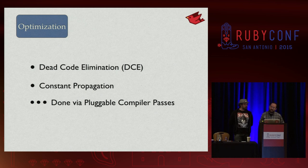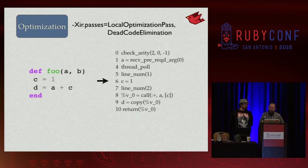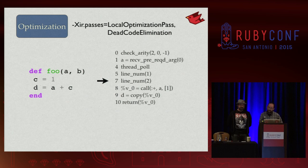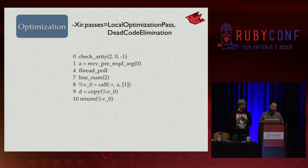We have pluggable compiler passes — dead code elimination and constant propagation are two popular ones. For example, in a simple method, if a parameter B isn't used, it gets eliminated. If a variable C is only used once and has a constant value, it gets propagated and eliminated. If nothing can happen between two line number instructions, we can remove one. We can eliminate half the instructions through static analysis alone, with no optimization needing to fail or de-optimize.